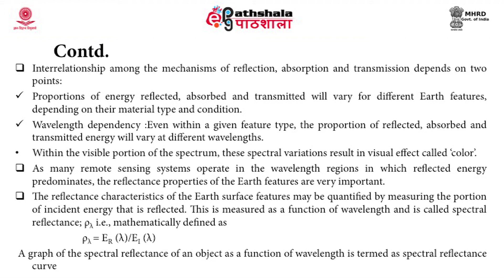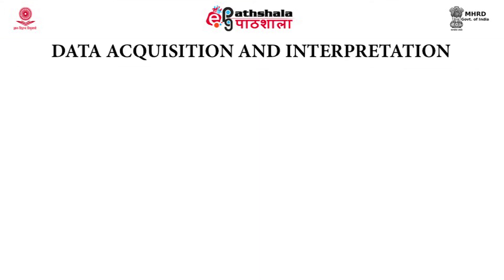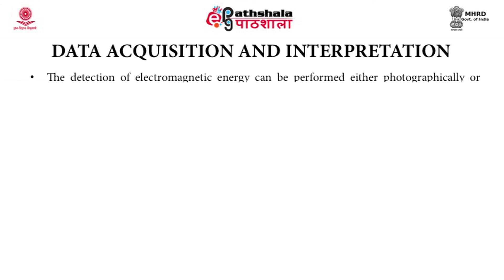The reflectance characteristics of Earth's surface features may be quantified by measuring the portion of incident energy that is reflected, measured as a function of wavelength — called spectral reflectance — which is mathematically defined as the ratio of reflected energy to incident energy at the same wavelength. Any graph showing the spectral reflectance of an object as a function of wavelength is termed a spectral reflectance curve.